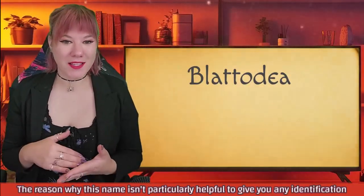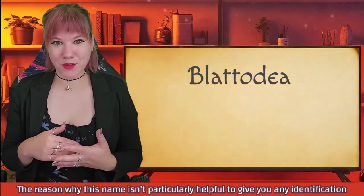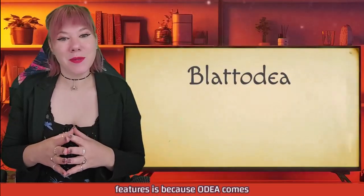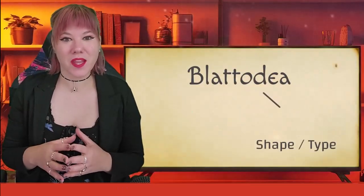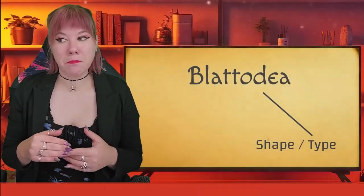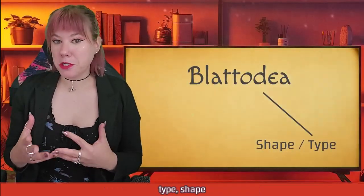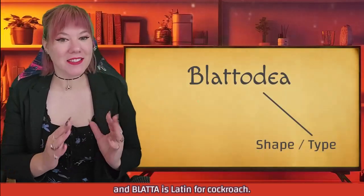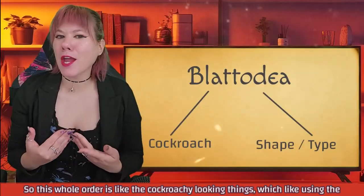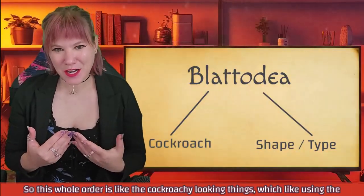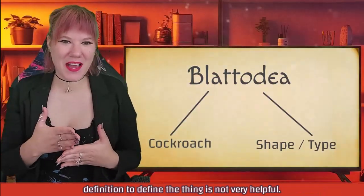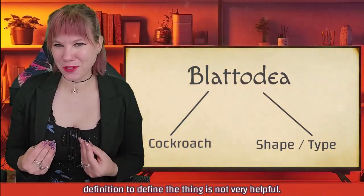The reason why this name isn't particularly helpful for identification features in the field is because -oda comes from the Greek eidos, which means type or shape, and blatta is Latin for cockroach. So this whole order is essentially the cockroachy-looking things, which — using the definition to define the thing is not very helpful.